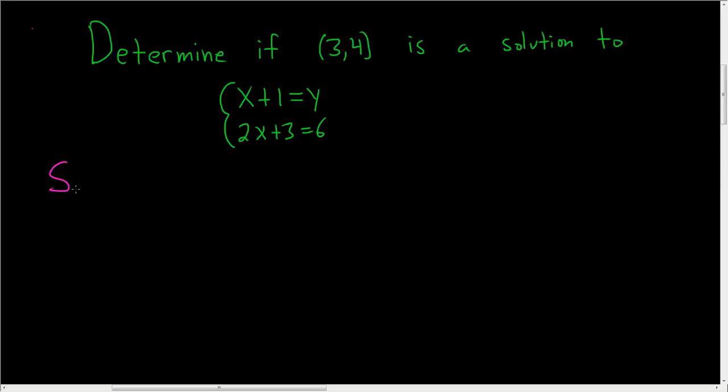Let's go ahead and work this out. So in order for this to be a solution to the system, when we plug in x equals 3 and y equals 4, both equations need to be true, not just one.